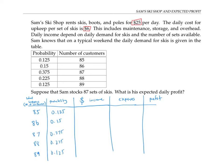Now, what kind of income is Sam going to get in each of these cases? Well, remember, he has 87 sets of skis. So if 85 customers come by, he's going to rent 85 of those sets of skis, which means he's going to earn 85 times the $25 per pair of skis.